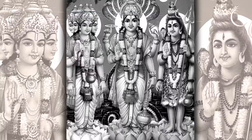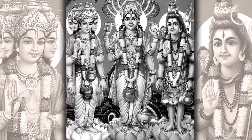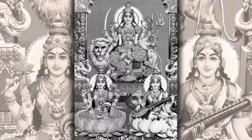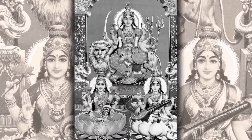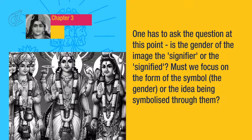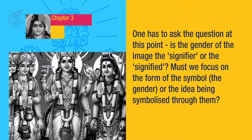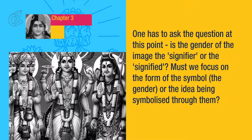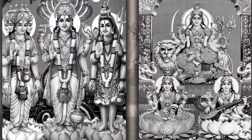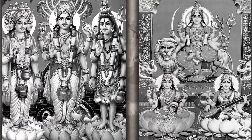The gods are doing — they can create, sustain, or destroy. The goddesses are passive; wealth, knowledge, and power can be created, sustained, or destroyed. One has to ask the question: is the gender of the image the signifier or the signified? Must we focus on the form of the symbol — the gender — or the idea being symbolized? If we focus on the form and assume that the signifier, which is the form, and the signified, which is the idea, are the same, then the image is a patriarchal one.